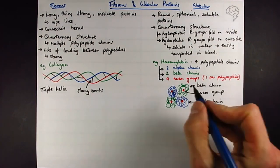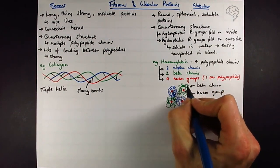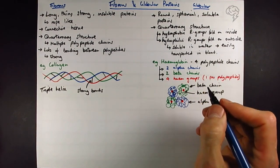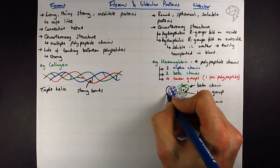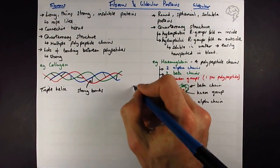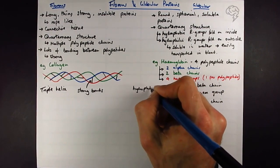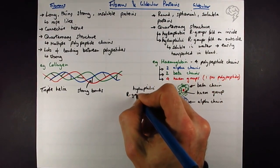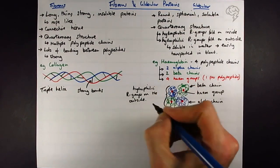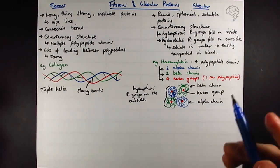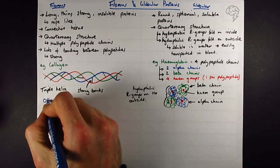Hard to draw, but on the outside, all the polypeptide R groups that are hydrophilic are going to be on the outside.